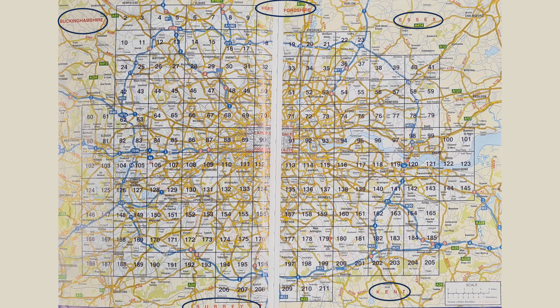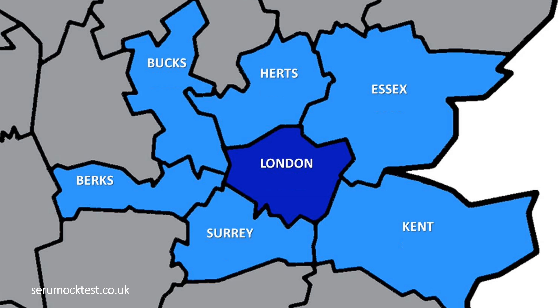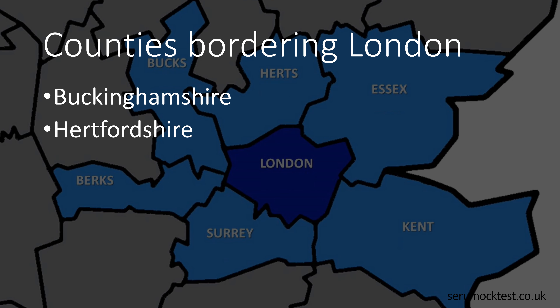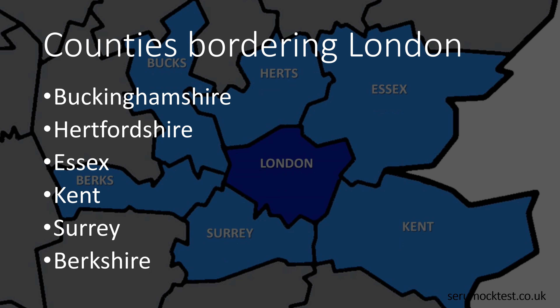Here in this area there's Berkshire, which is not on the list. So these are the six you need to remember: Buckinghamshire, Hertfordshire, Essex, Kent, Surrey, and also Berkshire. If any of these come in your exam, you just need to select them — and remember, you will have to select more than one. You can see Berkshire is just touching the border of London. So these are the six.